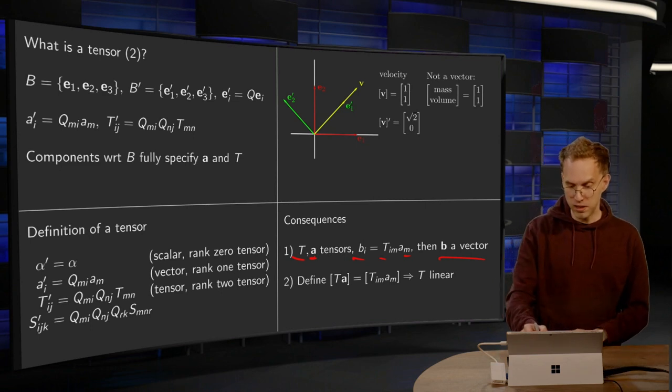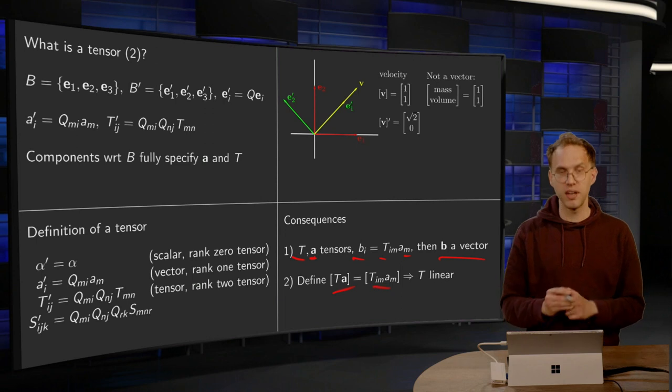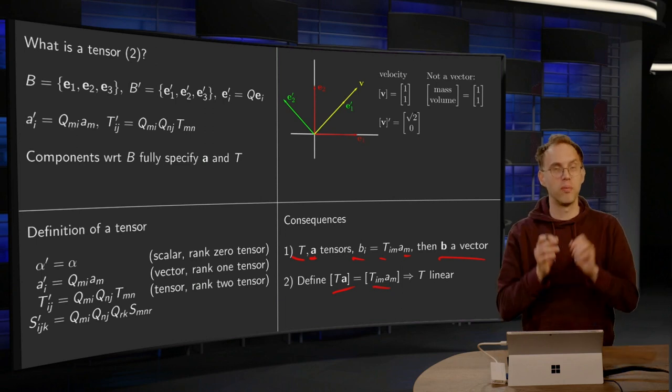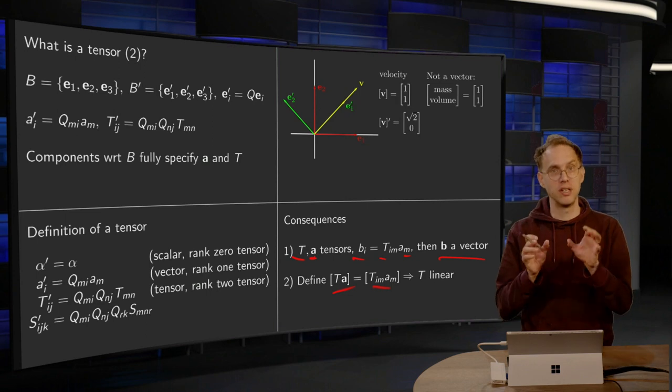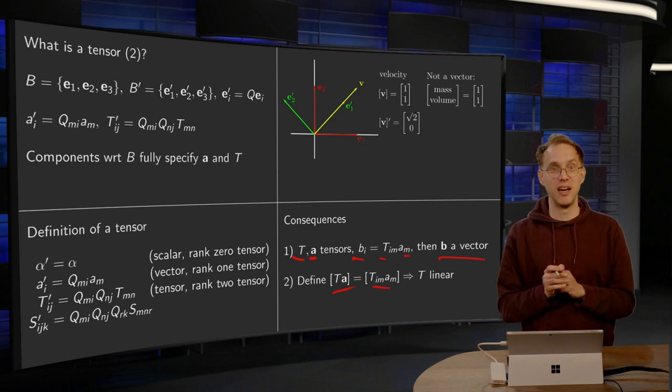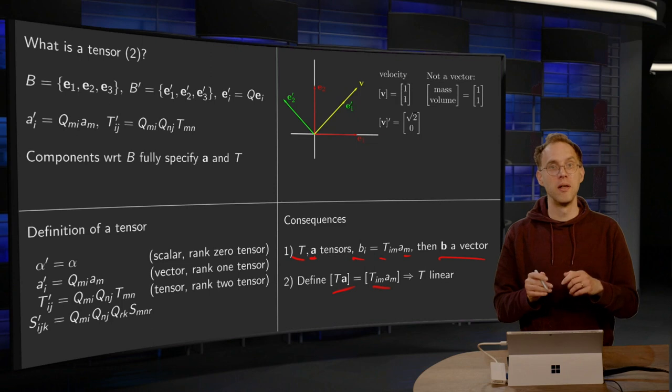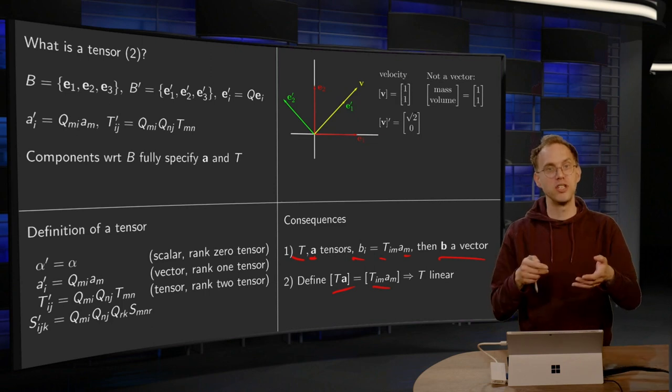And then defining the product T times a as Tim am, just as the normal matrix vector product. Here you're just multiplying numbers. So this definition is, in fact, linear. So using these transformation rules,